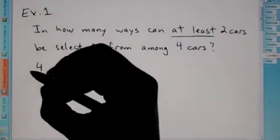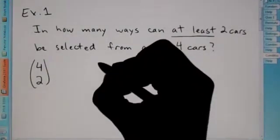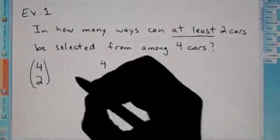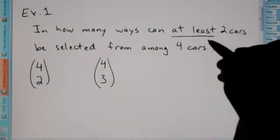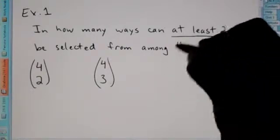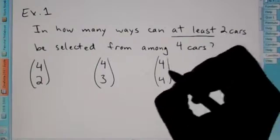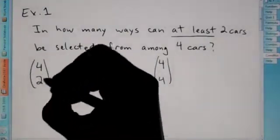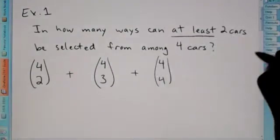How many ways can you select two cars? But also, what if we wanted three cars, because that's at least two. So you're going to do four and three. And lastly, how about if you want all four cars out of the four. So what we're going to do is we're going to take this total amount, and we're going to add it to here, plus add it to there.